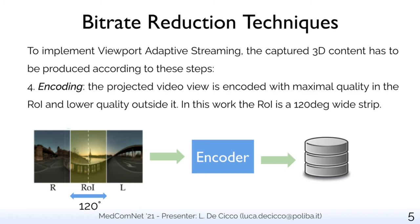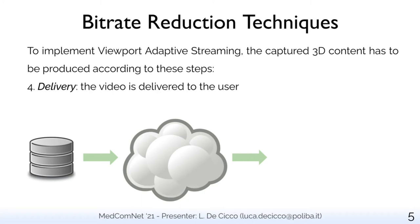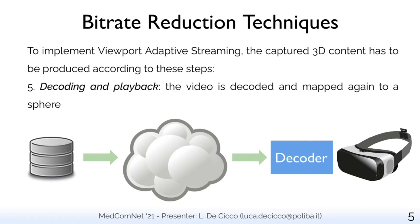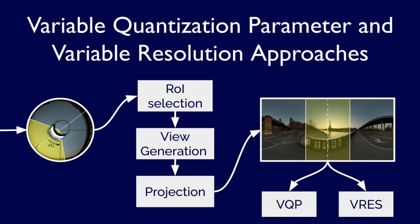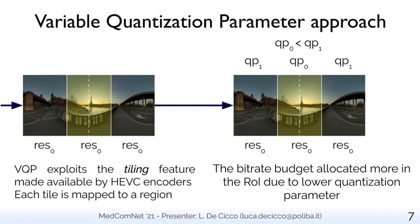This is the phase where bitrate reduction occurs and that we are going to investigate in this work. The compressed view chosen by a view selection scheme is then delivered to the user according to the ABR algorithm and the DASH standard. Once the video view is received, it is decoded and mapped again onto a sphere, allowing the user to enjoy the 3D content. Let's now focus on the main topic of this work: comparing the trade-off between visual quality and bitrate reduction of two different approaches. These two approaches employ exactly the same workflow; the only difference is the encoding and decoding of the content. We start with the same projected video and feed it to either VQP or VRES.